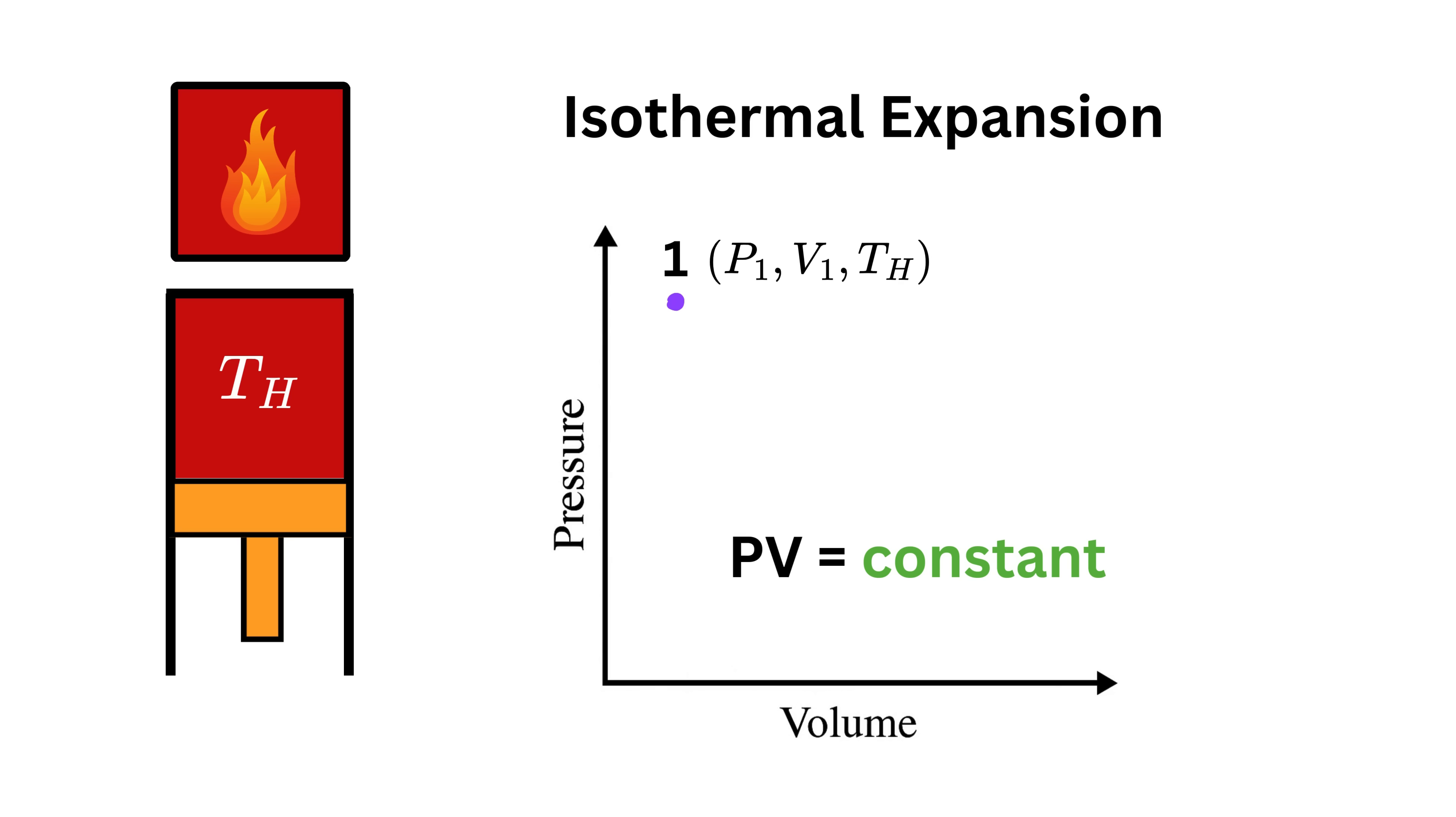Now we will track this process on the pressure-volume or PV diagram. Look here: if in an isothermal process T is constant and these two are constant as well, then P times V is constant. So if this is point 1 with pressure P1, volume V1, and temperature T_h, then along the process as the volume increases step by step from V1 to a larger value V2, the pressure must decrease from P1 to a smaller value P2 in such a way that the product of pressure and volume always stays the same. This is why on a pressure-volume graph, the isothermal process appears as a smooth downward curve, much like the graph of y = 1/x.